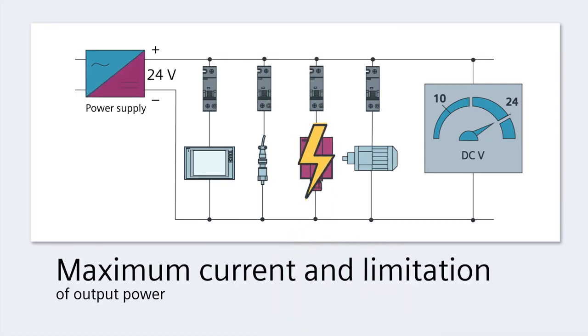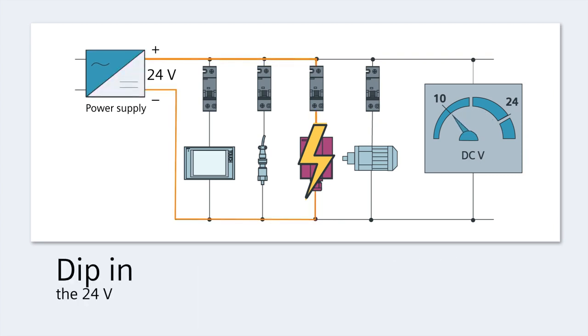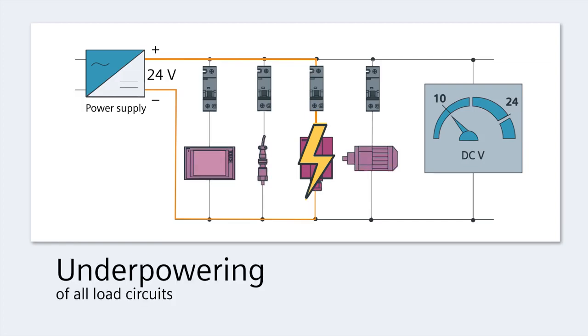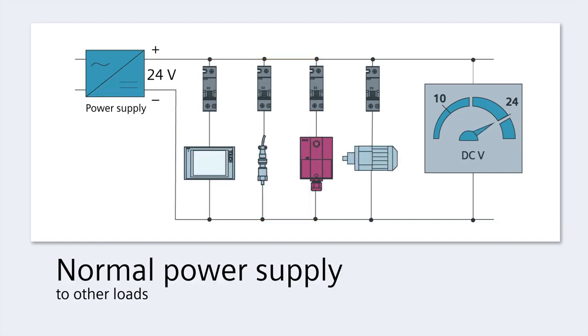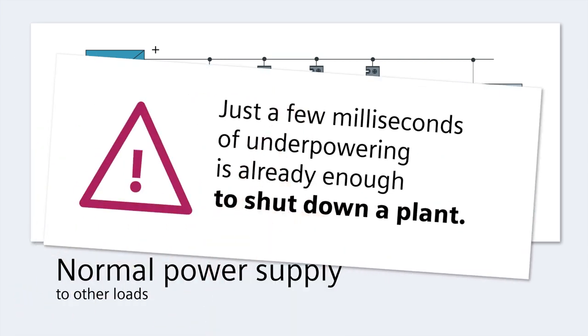The power supply delivers the maximum current and limits the output power. There's a dip in the 24 volts so that all the load circuits are underpowered. But there's often a delay before the miniature circuit breaker trips. This is due to its thermal magnetic tripping characteristic. Just a few milliseconds of underpowering is already enough to shut down a plant.